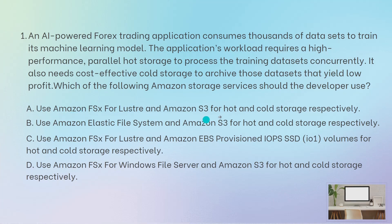The correct answer is to use FSx for Lustre and Amazon S3 for hot and cold storage respectively. S3 can be used because it has Glacier, which helps you store cold data. FSx for Lustre provides high-performance parallel hot storage, which is exactly what's needed here for processing the training files concurrently. So FSx for Lustre and S3 are the correct combination.